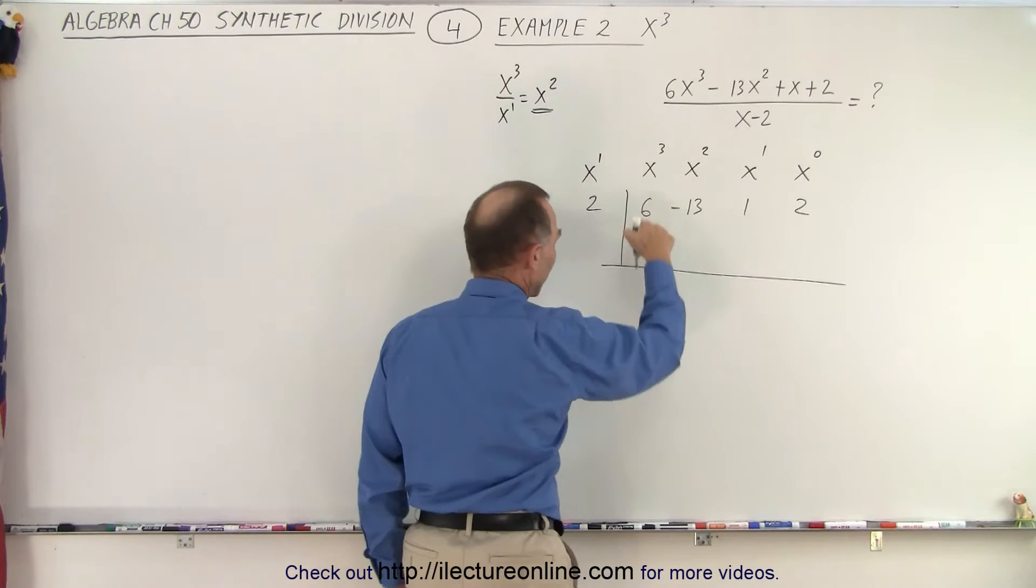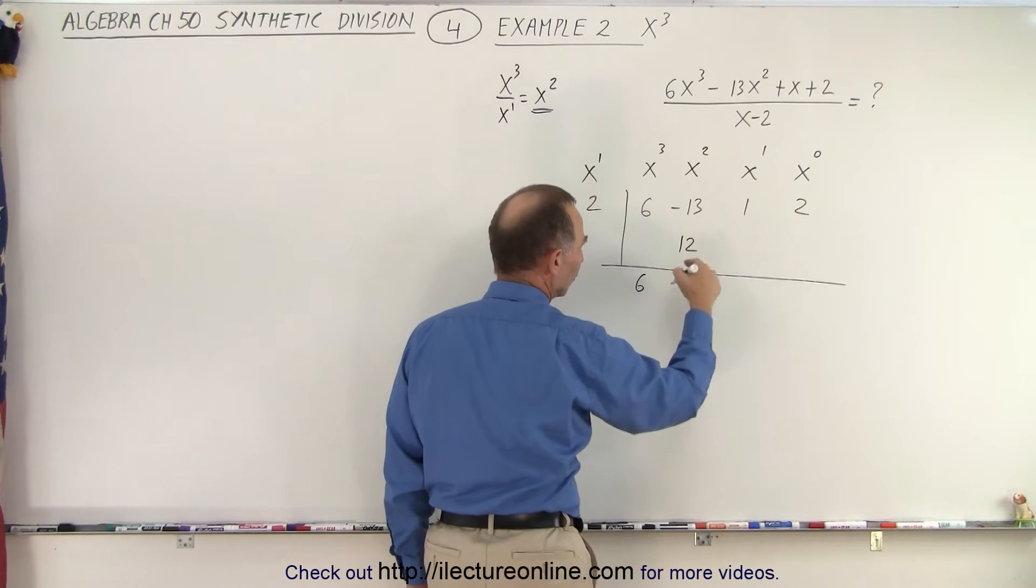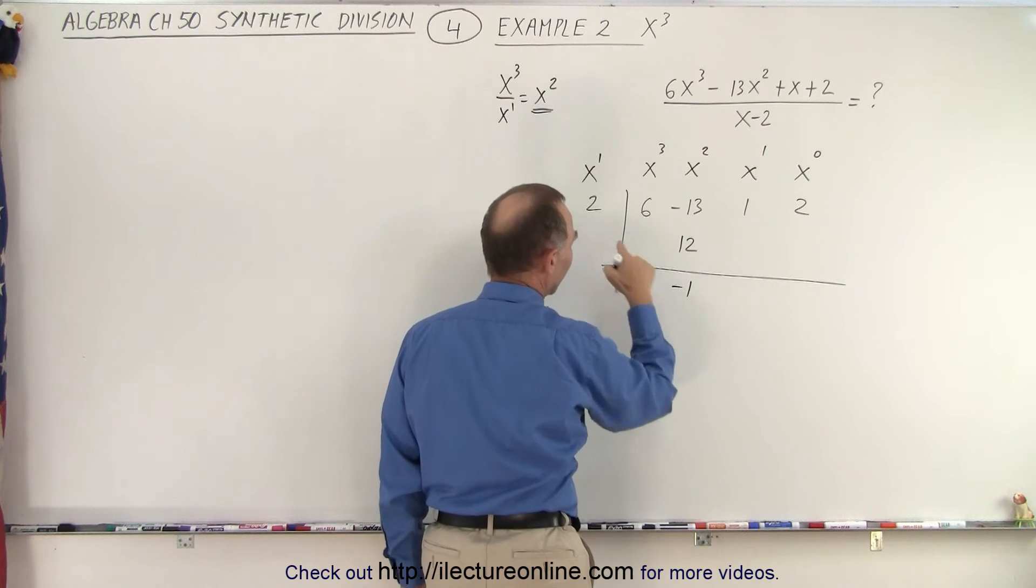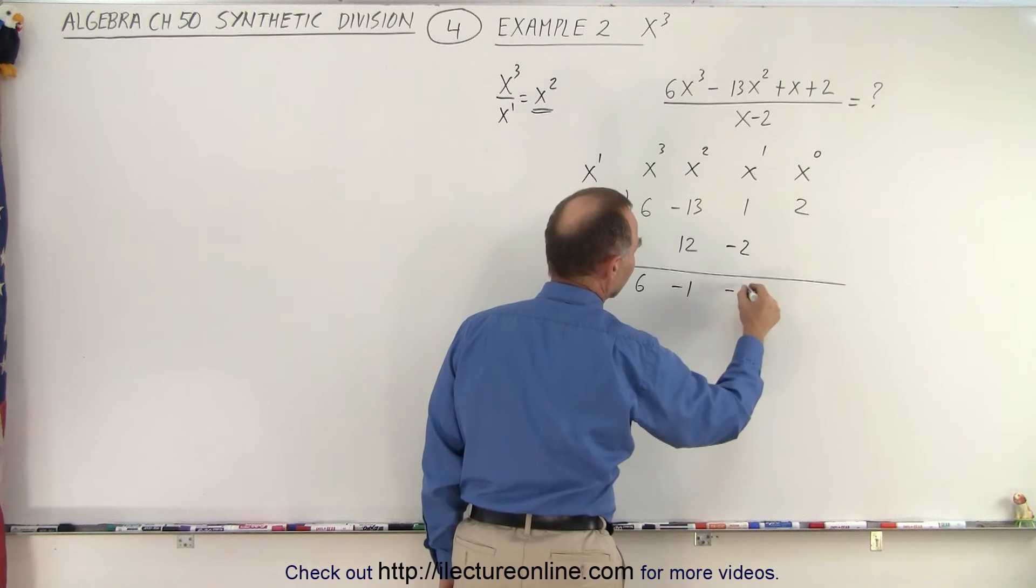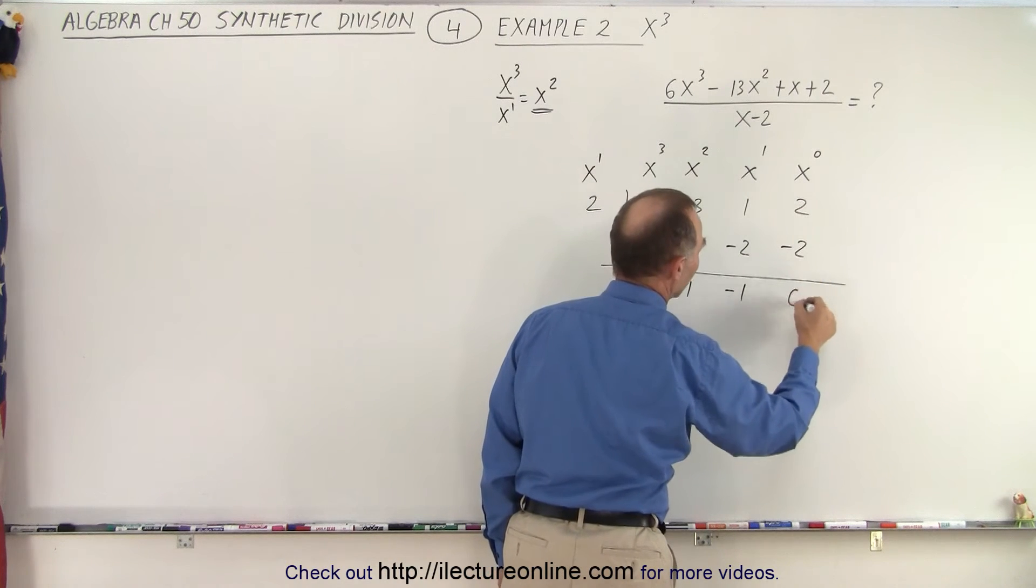But let's go through the process. We drop down the first number. 2 times 6 is 12. We add the 2 together, we get -1. 2 times -1 is -2. We add them together, we get -1. 2 times -1 is -2. We add it together, we get 0.